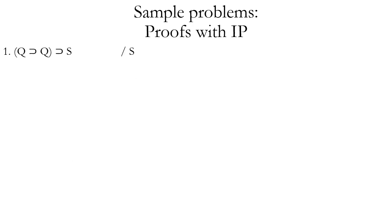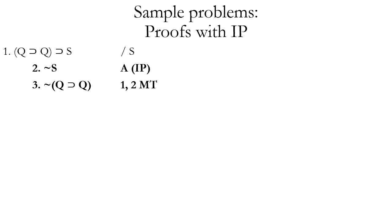Let's look at another sample problem. In this case, we have one premise and we're trying to prove S. So what should we assume if we're using indirect proof? We want to assume tilde S or not S, which is the logical opposite of S. Now we have to strategize how we can use our assumption not S with our lonely premise. If you ever feel stuck, it's not so bad to just try using a rule on the premises you have and see if that helps you get closer to the conclusion.